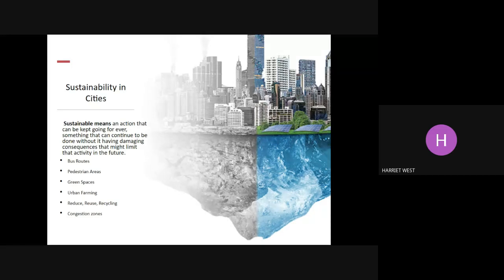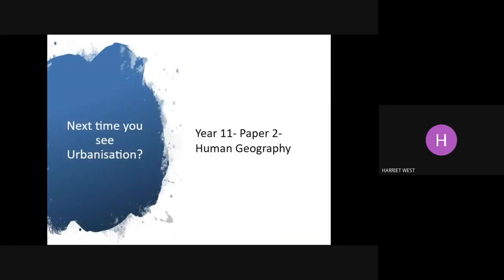So in this webinar, we've looked at a changing world. We've thought about the urban pattern, urbanisation and how it's happening more in LICs than HICs. We've thought about why it's happening — rural to urban migration with push and pull factors, and natural increase and population growth within cities. We've also thought about the impacts of people moving to cities, both positive and negative. And we've thought about the future of cities and how they are changing. The next time you'll see urbanisation will be in Year 11, Paper 2 in Human Geography. If you can remember everything from this webinar, it will really support your learning through GCSE. Thank you so much for listening.